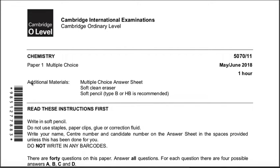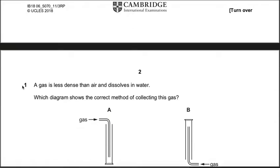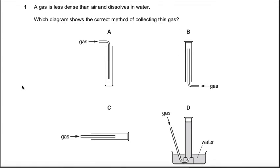Multiple choice questions, May June 2018, this is chemistry paper 5070. Question number one: a gas is less dense than air and dissolves in water. Which diagram shows the correct method of collecting this gas?